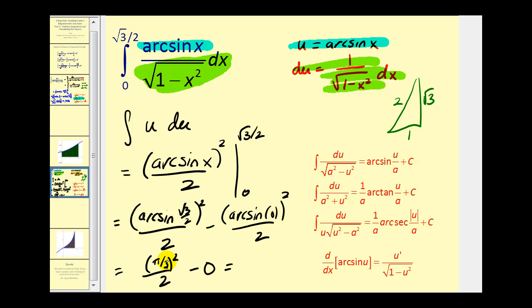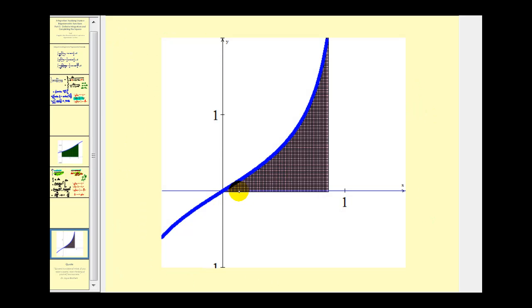So we'll have pi squared over 9 divided by 2, which is pi squared divided by 18. Let's go and take a look at the graph of this function. It is non-negative on the interval from 0 to square root 3 over 2. Therefore, pi squared over 18 is equal to the area bounded by this function and the x-axis on the given interval. Okay, that's going to do it for this video. I hope you found it helpful.